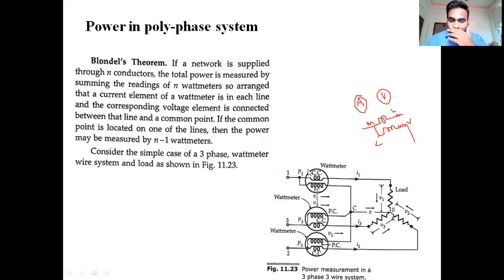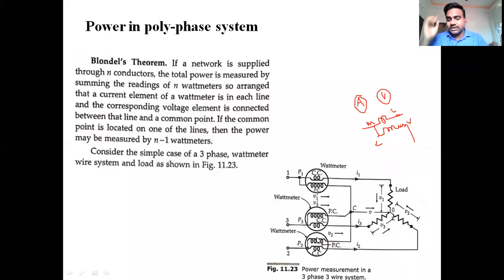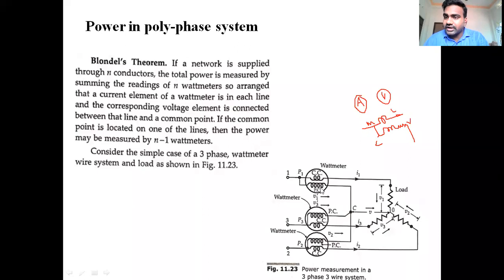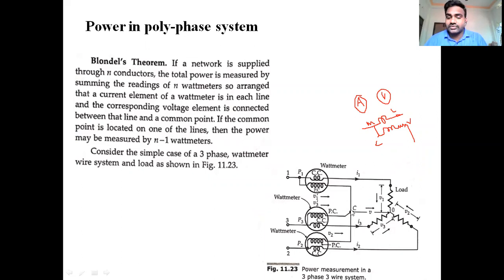Wattmeter connected to phase 1 measures power P1, wattmeter connected to phase 3 measures P3, and wattmeter connected to phase 2 measures P2. The current coil is always connected in series to the line; the potential coil is connected in parallel to the line. All potential coil terminals are connected together at a common point.